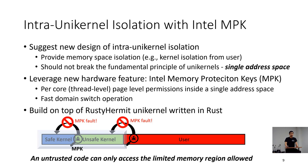We build our scheme on top of RustyHermit unikernel, which is written in Rust. With MPK, an untrusted code can only access the limited memory region allowed. If a violation occurs, MPK fault terminates the unikernel execution.